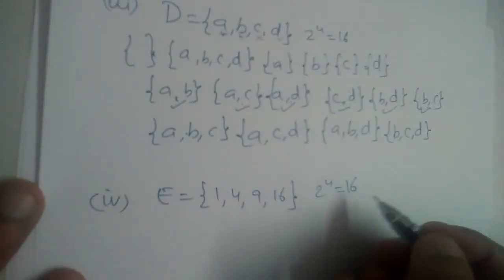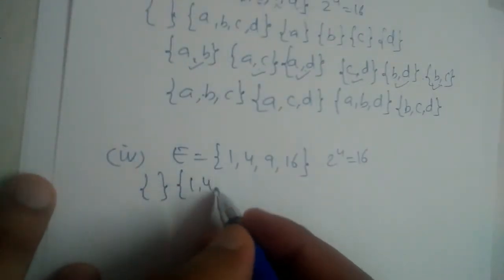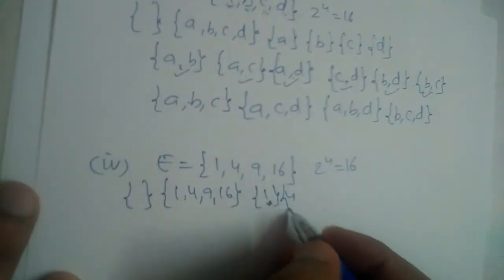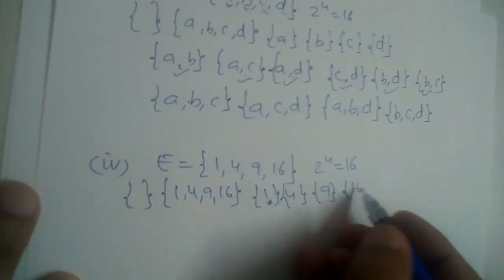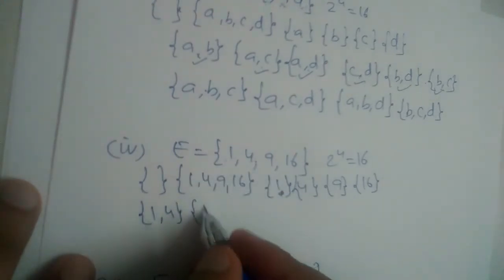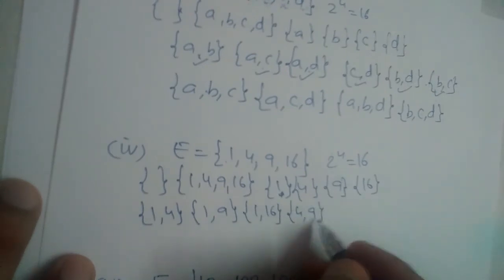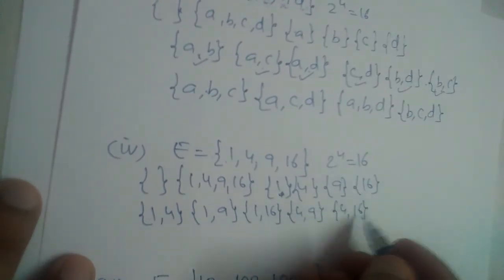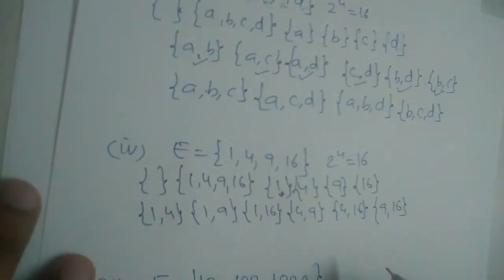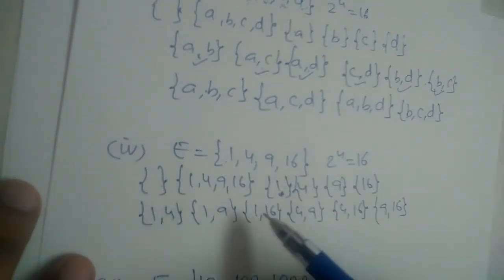For E = {1, 4, 9, 16}, we also have 2 power 4 equal to 16 subsets. We write the empty set and {1, 4, 9, 16}. Single-element subsets: {1}, {4}, {9}, {16}. Two-element subsets: {1, 4}, {1, 9}, {1, 16}, {4, 9}, {4, 16}, {9, 16}. That brings us to 12 subsets so far.